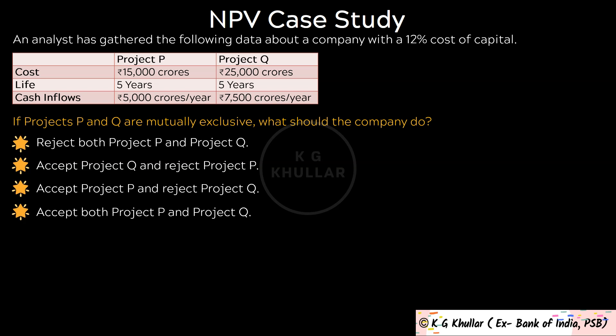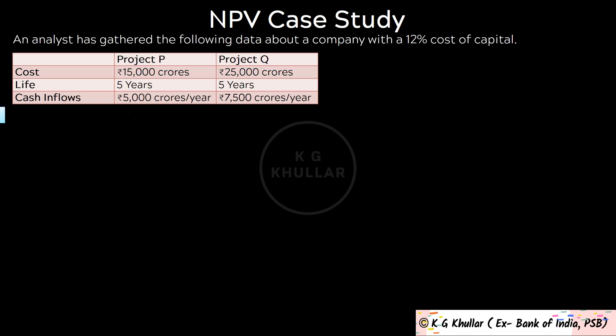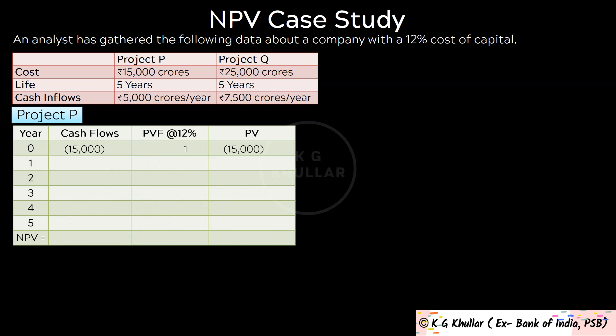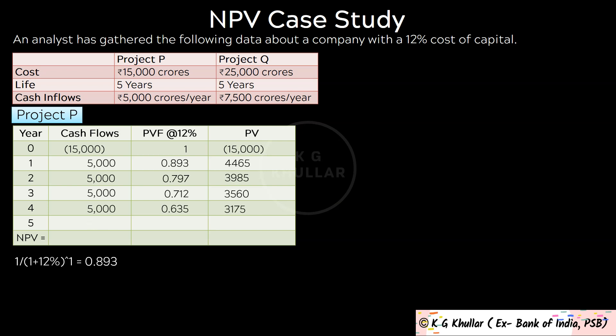Let's find the NPV for each project. For project P: the Rs. 15,000 crores initial investment is shown as negative at year 0, with present value of negative 15,000 crores. For year 1, cash flow is Rs. 5,000 crores and present value factor is 1 divided by 1 plus 12%, that is 0.893, giving a present value of Rs. 4,465 crores. After finding all other present values, the NPV for project P is: negative 15,000 plus 4,465 plus 3,985 plus 3,560 plus 3,175 plus 2,835 equals Rs. 3,020 crores. Similarly, NPV for project Q is Rs. 2,030 crores.